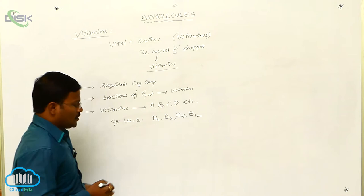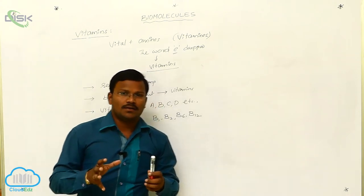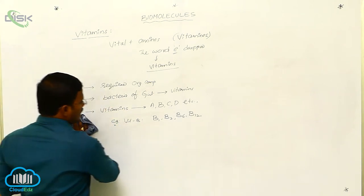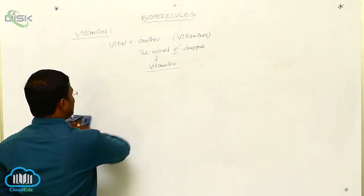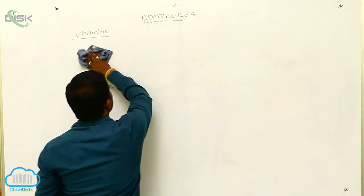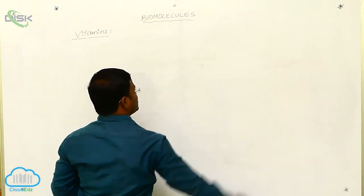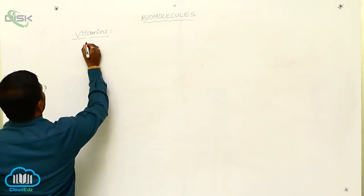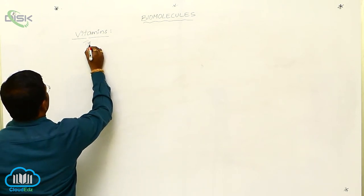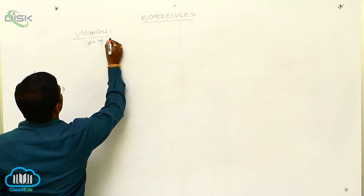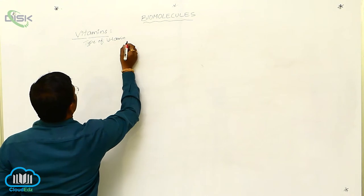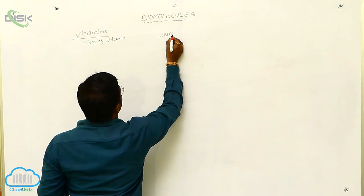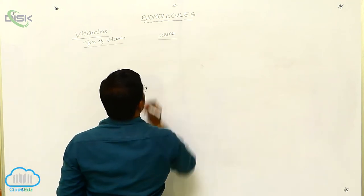A deficient quantity of vitamins may cause diseases to a living organism's body. Let us look at a table showing the different types of vitamins, their sources, and the diseases that result from the deficiency of each particular vitamin.